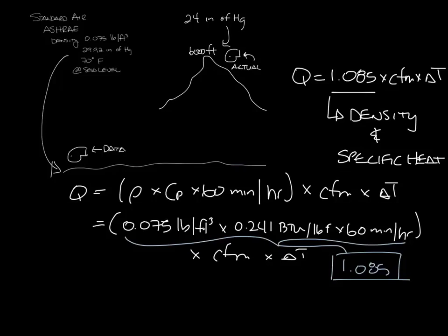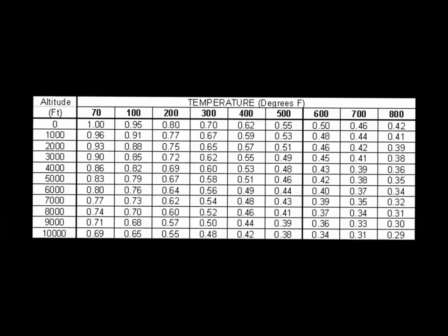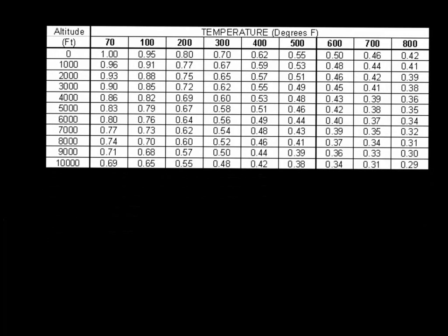Luckily you don't have to know the air density at every altitude and temperature. Lots of people have correction factor tables you can look at. So let's move this over here. And here's an example of a correction factor table by altitude and by temperature. Let's move this up and give myself some room. So you can see at 6,000 feet and 70 degrees, the correction factor is 0.8. So you take your 1.085 times your 0.8 and that gives you 0.87.